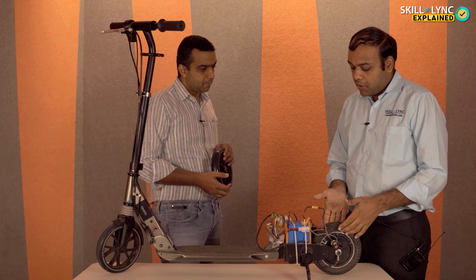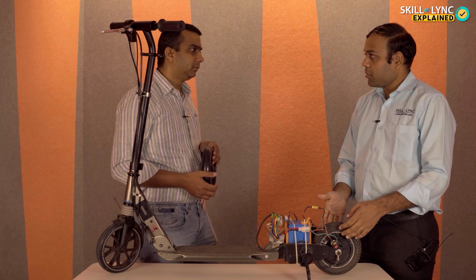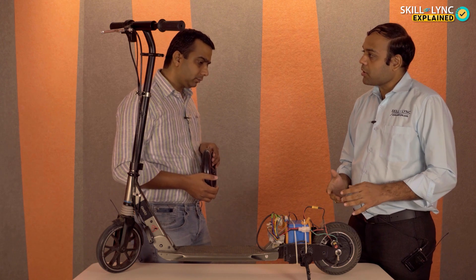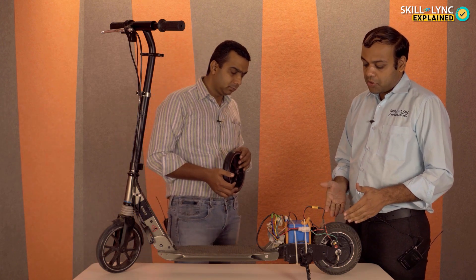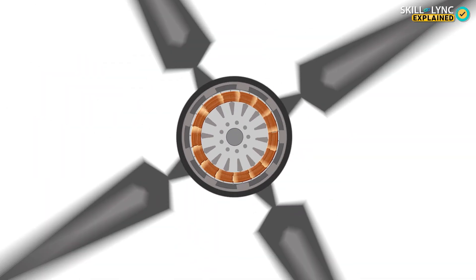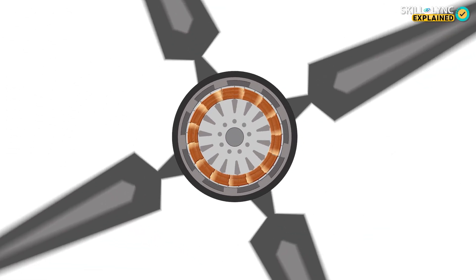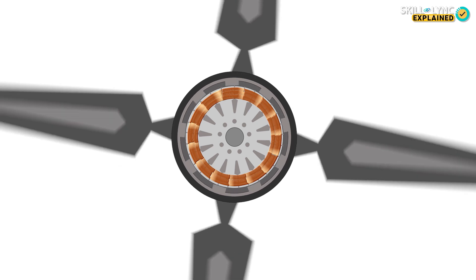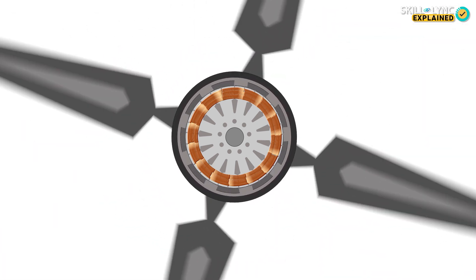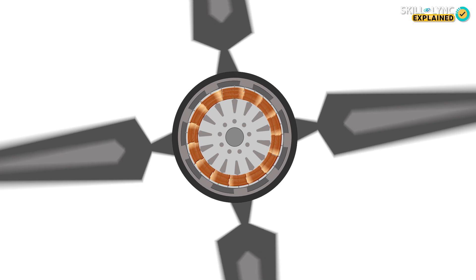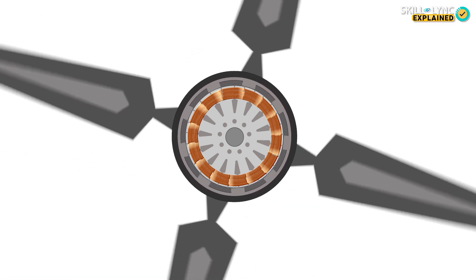So this is exactly similar construction where you have an outer rotor and a ceiling fan has also the outer rotor construction. So a ceiling fan motor, the stator windings are actually kept fixed with the ceiling and the rotor is outside and the rotor is rotating those wings of the fan. The same construction, but the rotor here is made up of permanent magnets.